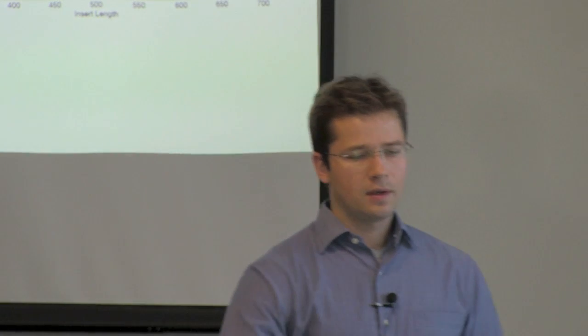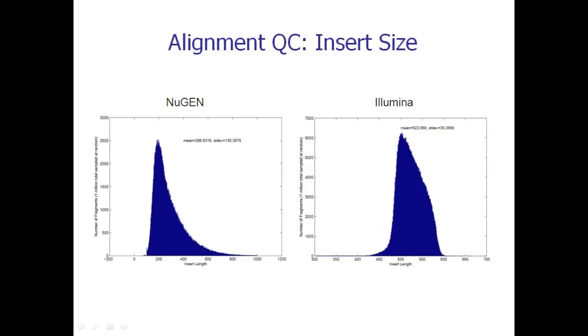There was a distinct difference in the insert sizes. Because this is paired-end data, I can look at how far the pairs map apart to get an estimate of the insert size. For NuGen, the average was 286, and there's a skew that goes out to about 1000. Whereas the Illumina data set had a tighter distribution with a mean of 523 bases. There are positives and negatives to this — one positive is that by going out with longer fragments, you can often capture sequence that's repetitive and get into areas that are difficult to sequence.